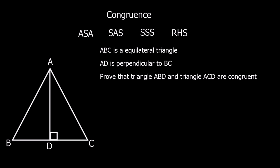Here's a question: we've got an equilateral triangle. AD is perpendicular to BC, meaning there's a 90-degree angle, and we've got to prove that the two triangles — triangle ABD and triangle ACD — are congruent.